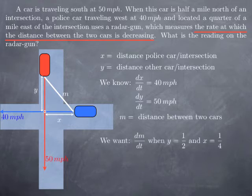In other words, we want dm over dt and we want the value of dm over dt at a particular time, at a particular instant, namely when the red car is half a mile north of the intersection and the police car is one-fourth of a mile east of the intersection.